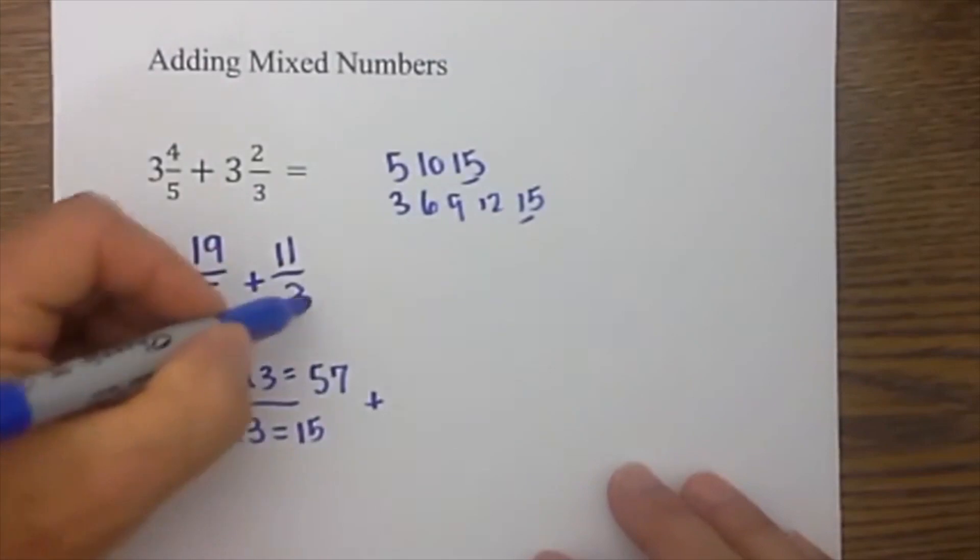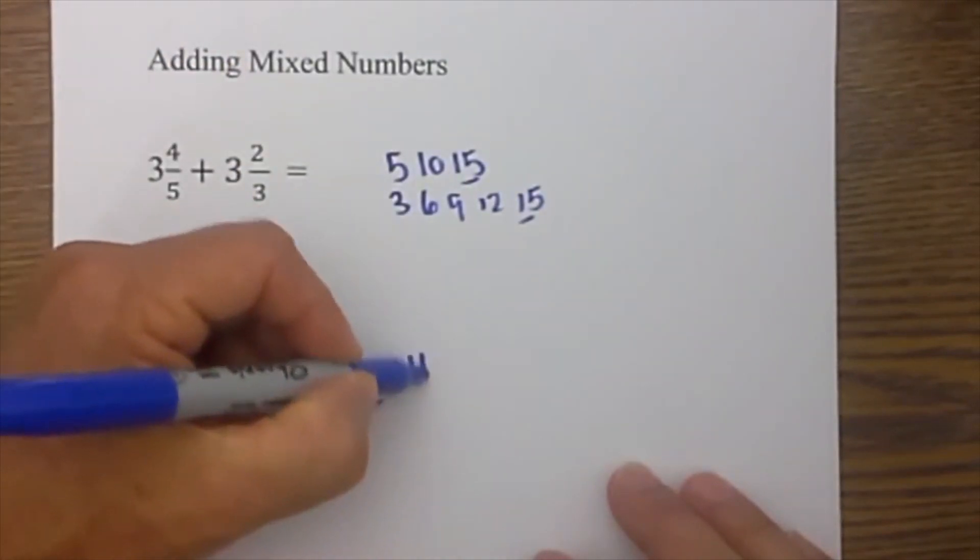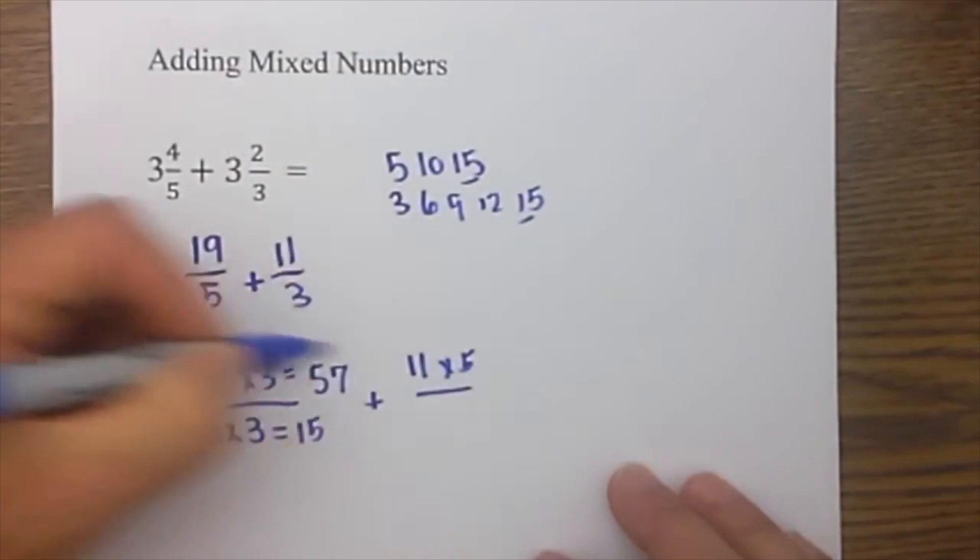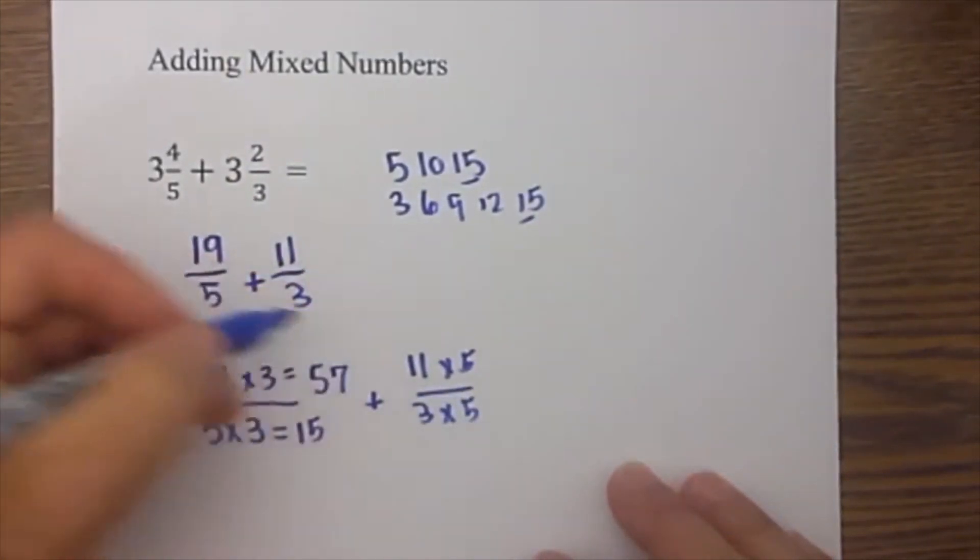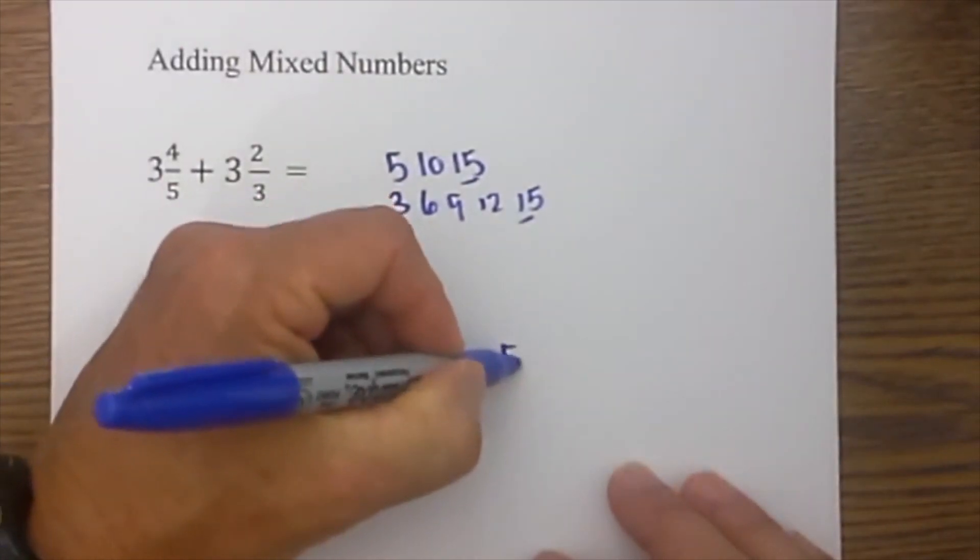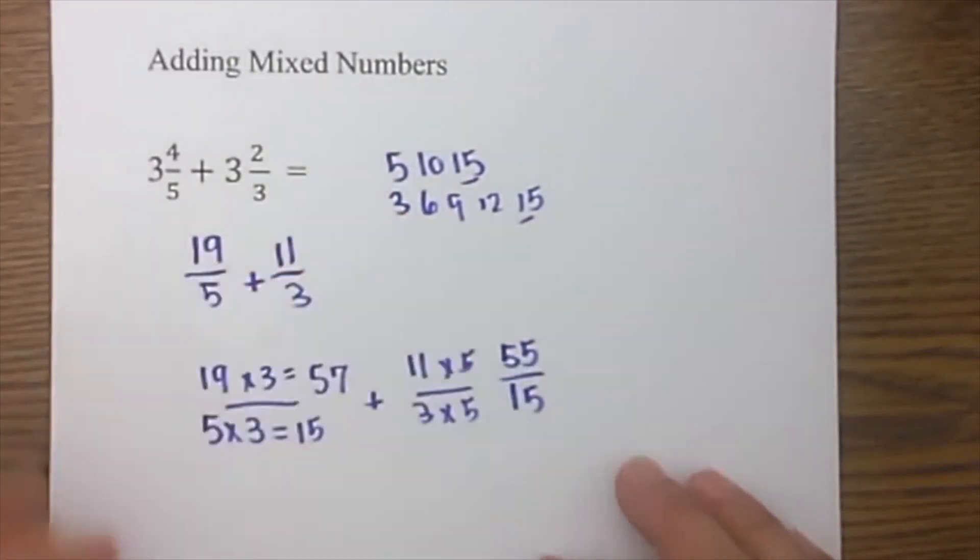Plus 3 goes into 15 five times, so it's 11 times 5 over 3 times 5. 11 times 5 is 55 and 3 times 5 is 15.